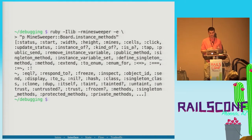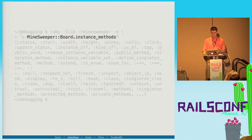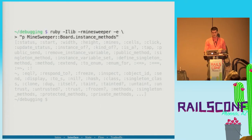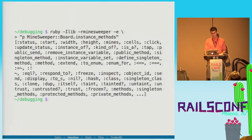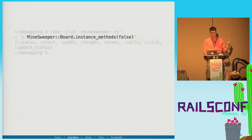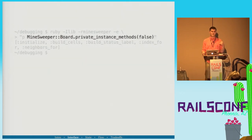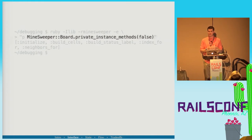We can also find out everything we can call on an object — list its instance methods. The instance_methods function gives an array of symbols representing those methods. We can do this on the command line: the -I flag adds the lib directory to the load path, -r requires it, -e evaluates it. We get all that goodness. Same for instance methods defined only on this class, private instance methods, and private instance methods only on this class. All available from the command line in about 40 characters.